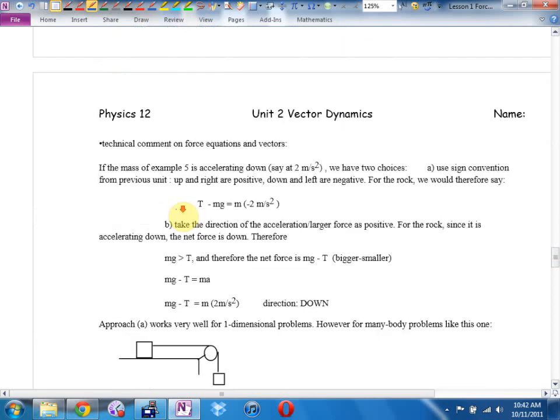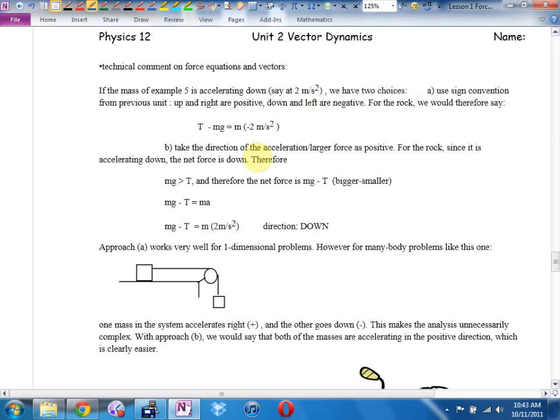Little technical comment here on force equations and vectors. If the mass in example 5 is accelerating down, say at 2 meters second squared, we have two choices. We could always let down be positive and always let up be positive. So up and right could be positive, down and left are negative. I don't like that approach. Caitlin, it works great for small one dimensional problems but for two dimensional problems we have a problem. For example, here this mass is moving down negative but this mass is moving to the right which last unit was positive. So we are going to use our tug of war winner minus loser approach to try and deal with these. We will decide to let winner be positive we will decide to let loser be negative.